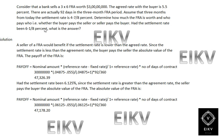Had the settlement rate been 6 1/8 percent, what is the answer? So here we have a 3×6 FRA for 92 days and we need to compute the effective rate. The seller of the FRA would benefit if the settlement rate is lower than the agreed rate. Since the settlement rate is less than the agreed rate, the buyer pays the seller the absolute value of the FRA.